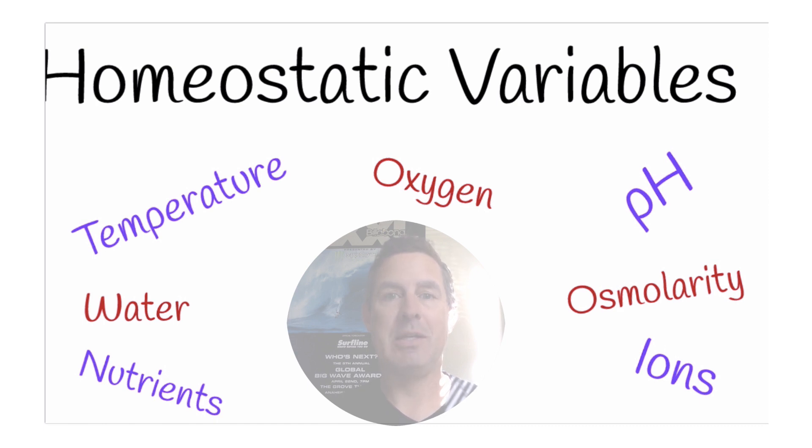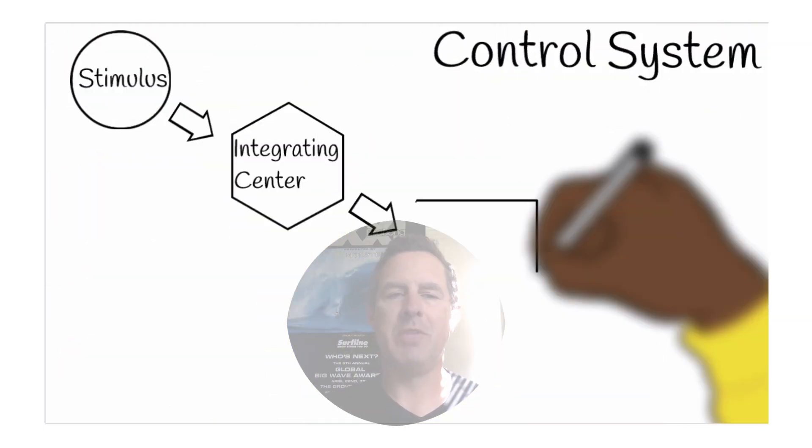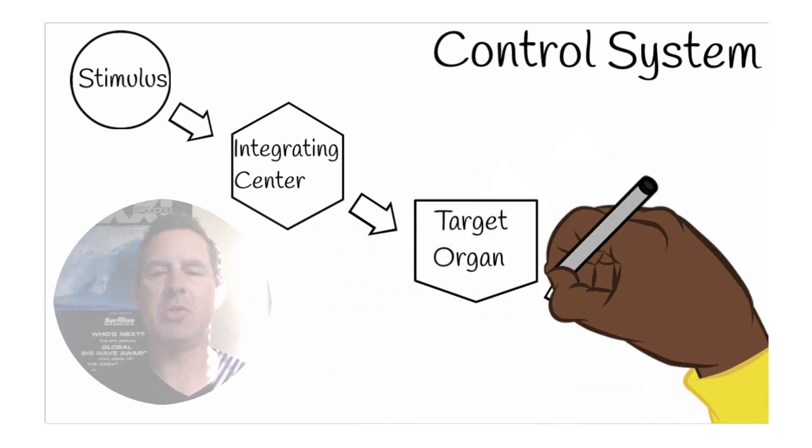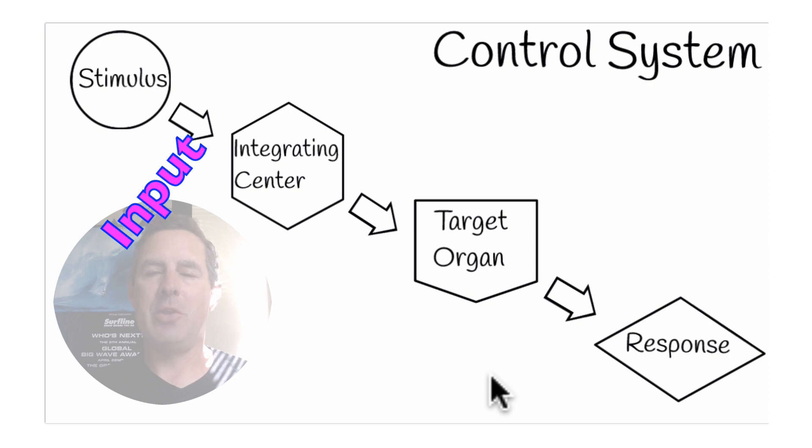Let's take a look at the control systems of homeostasis. They involve a stimulus, an integrating center, target organ, and a response. One thing I don't have here is an input and output signal. This arrow right here would represent an input signal, this arrow right here would represent an output signal. Now this is a system that controls homeostasis.